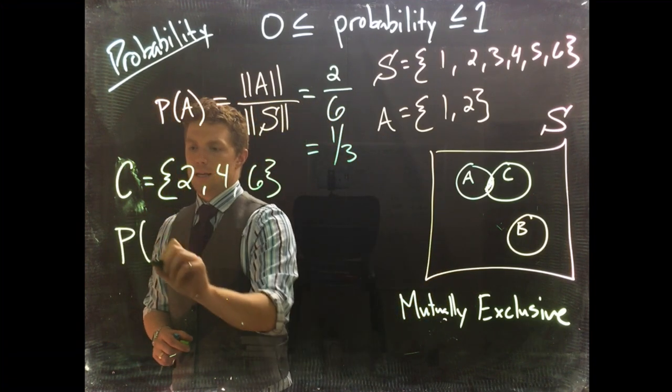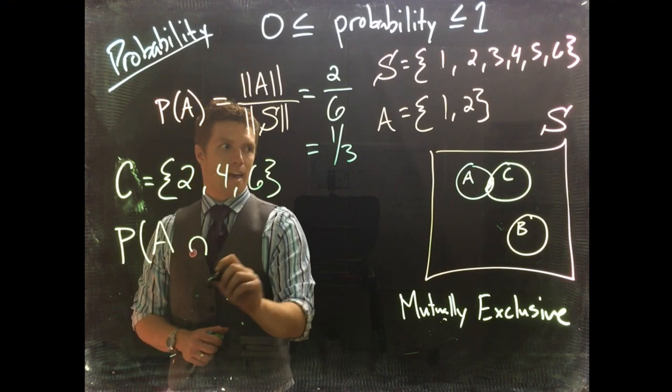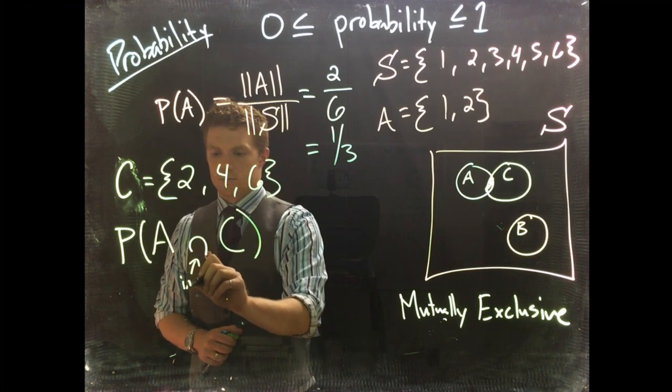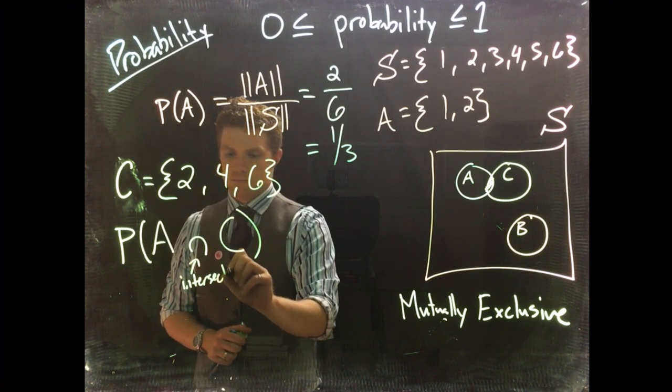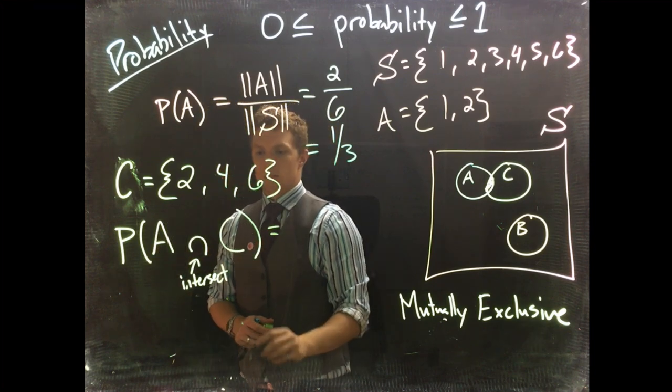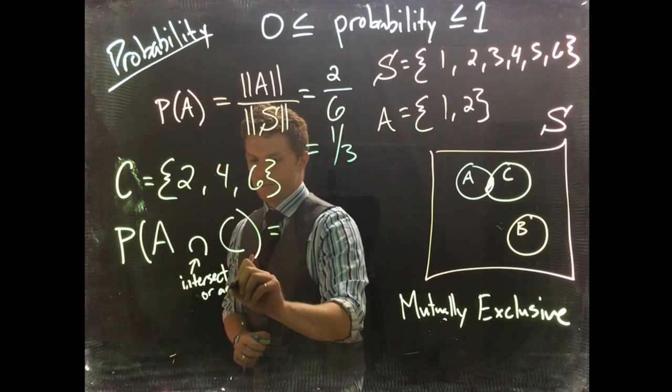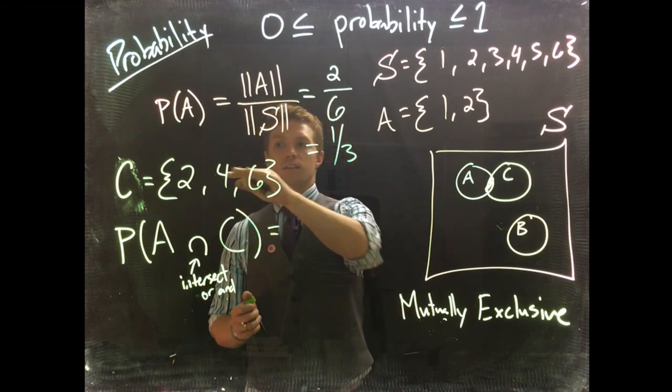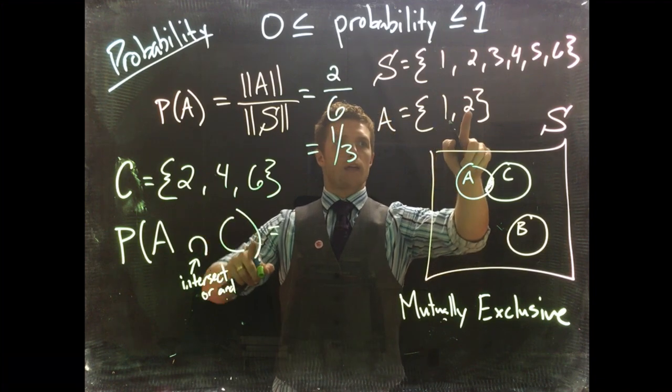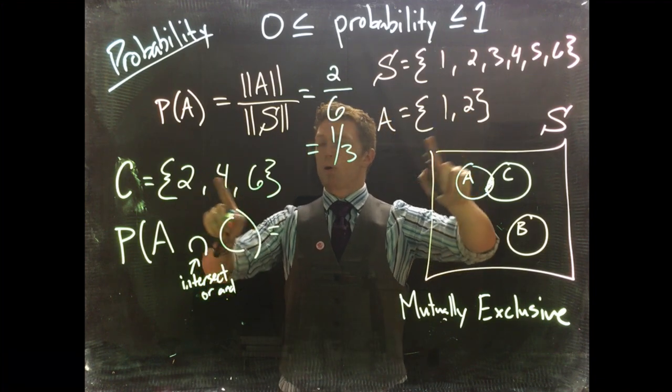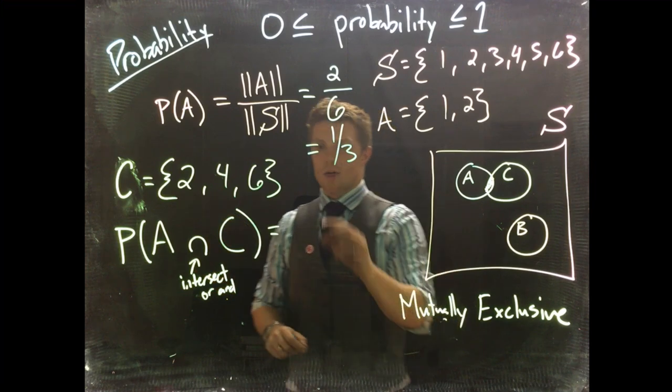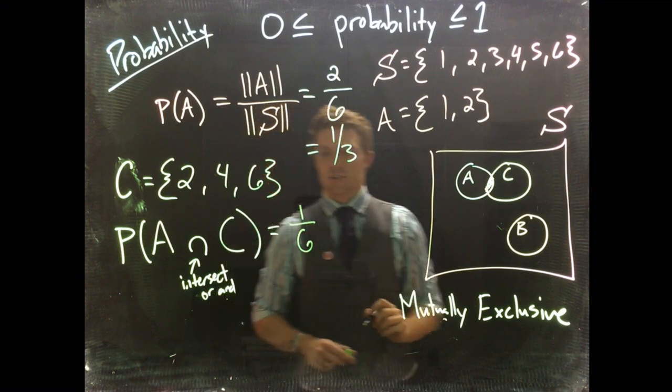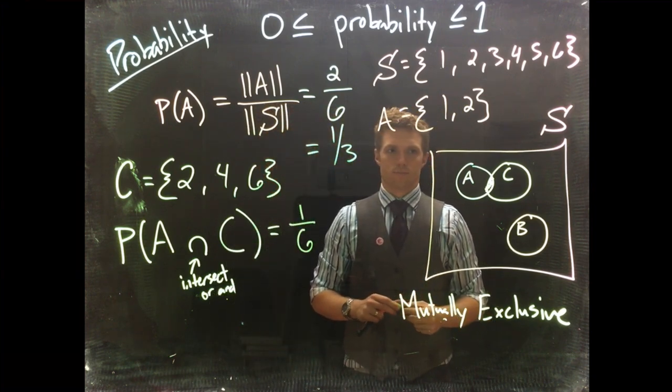If we want to know the probability of A and C, or we also call this intersect, we need to know what are all the outcomes that occur in both C and A. Looking at these two, the number 2 is in both event A and event C, so that would be 1 divided by our sample space 6, which is 1/6.